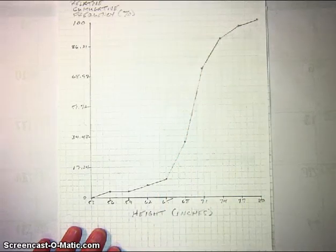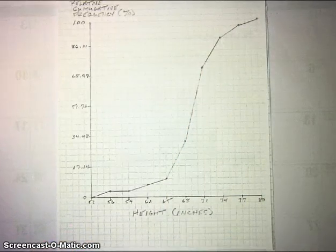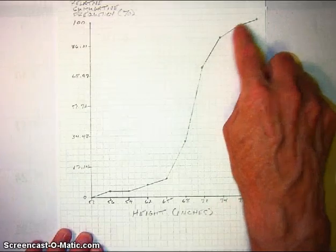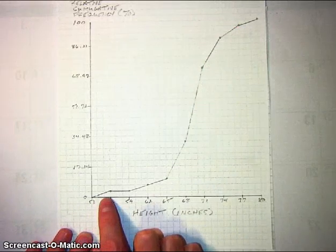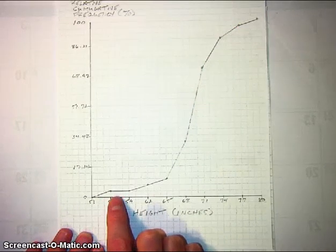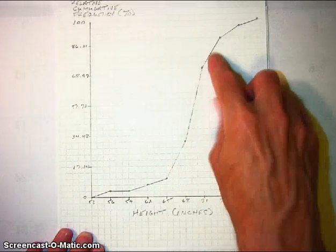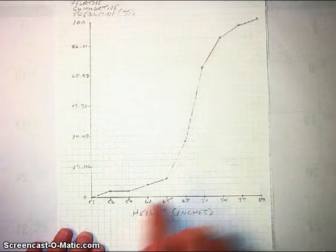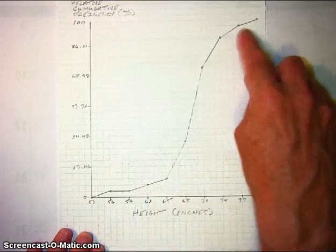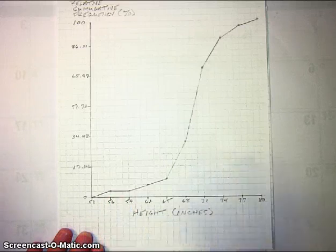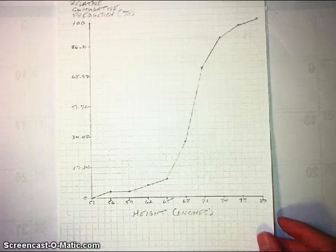You can basically work either way. You can work from the histogram to the ogive and figure out what the ogive looks like based on what the histogram looks like. Or you could work backwards from the ogive and figure out what the corresponding histogram would look like — where the tallest bar would be, shorter bars on the tails, and no bar at all where the ogive is flat. All that information is contained in the ogive just as well as it's contained in the histogram.